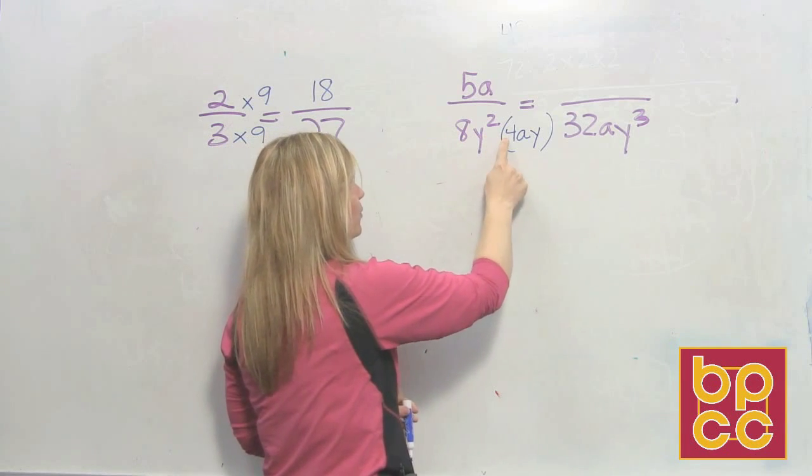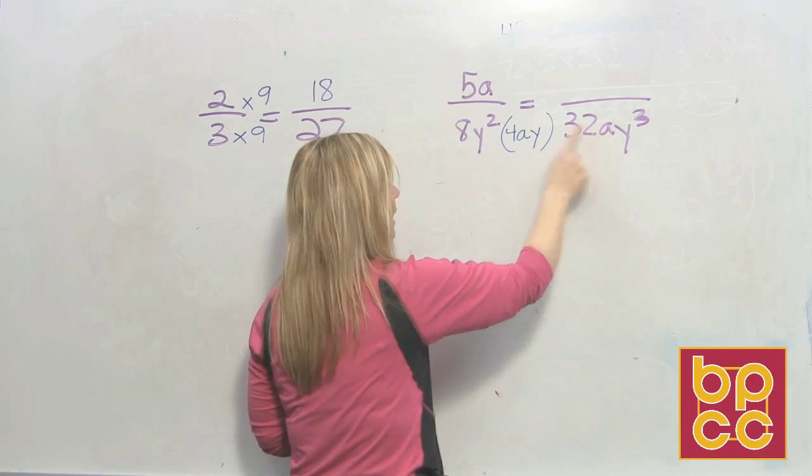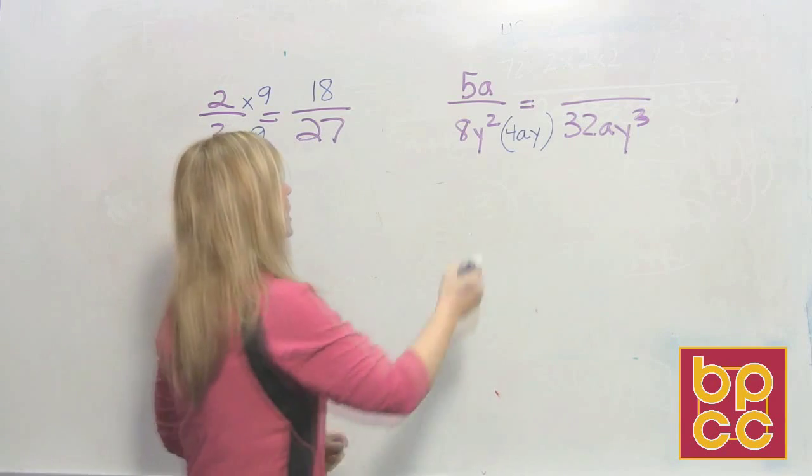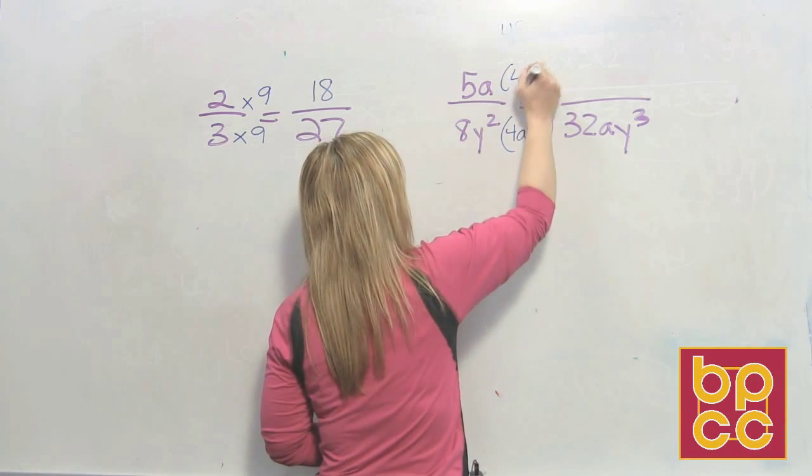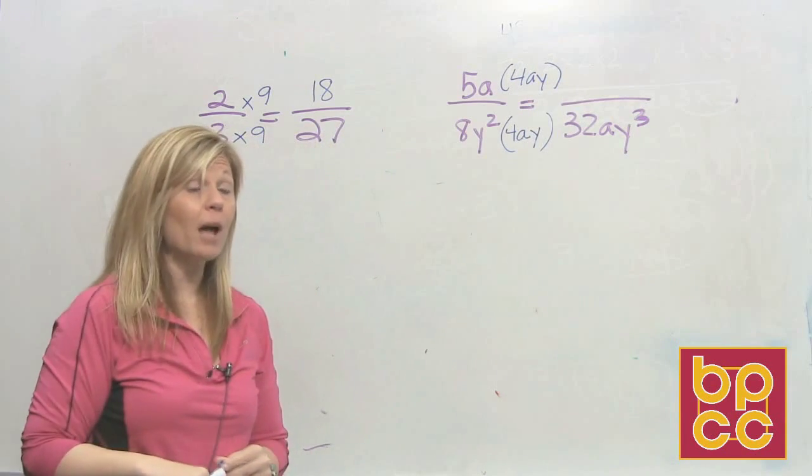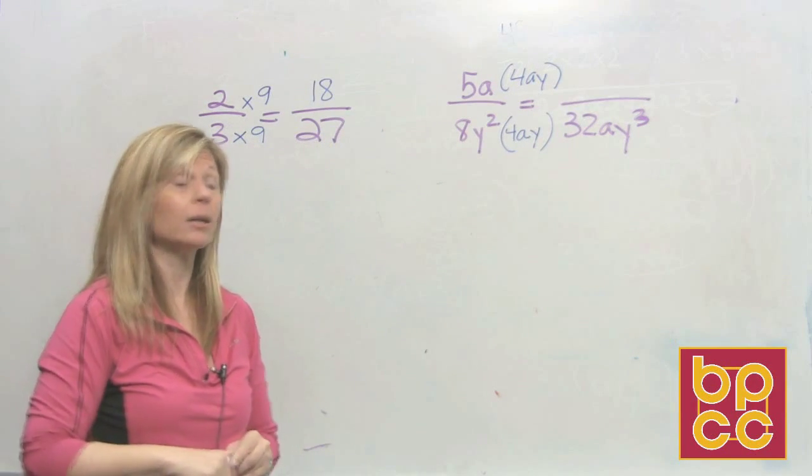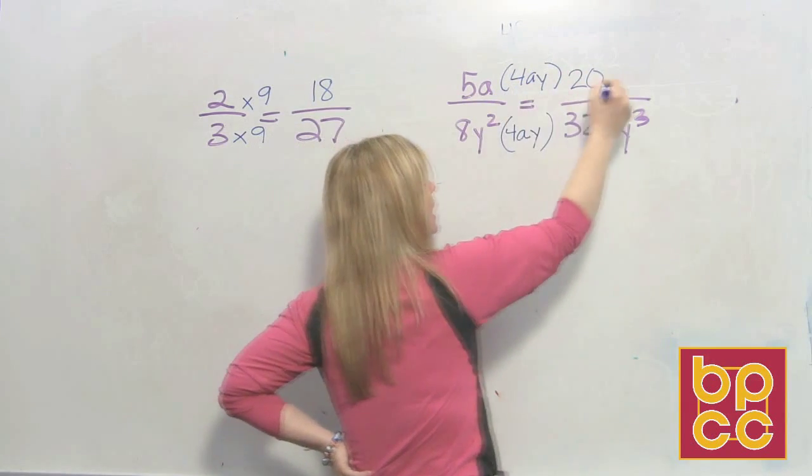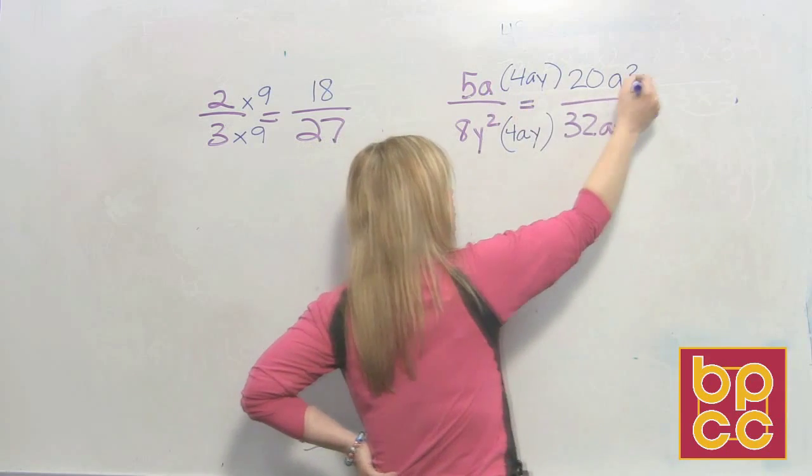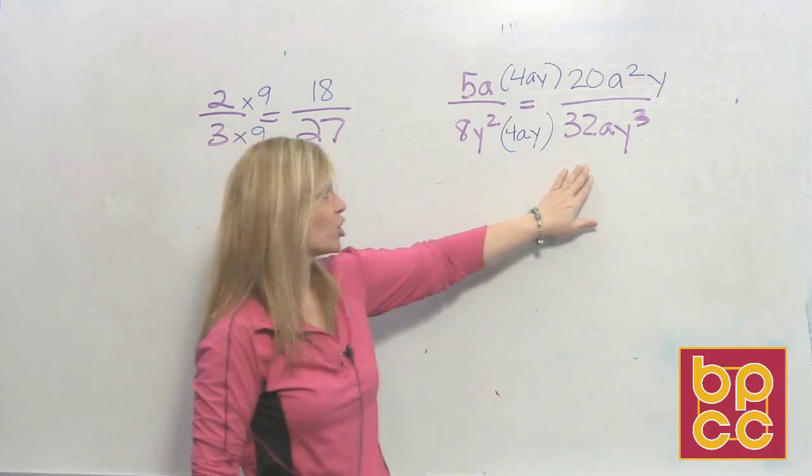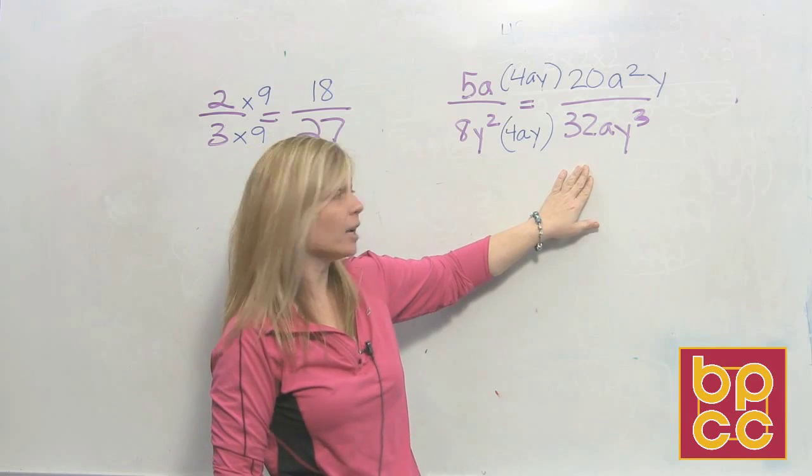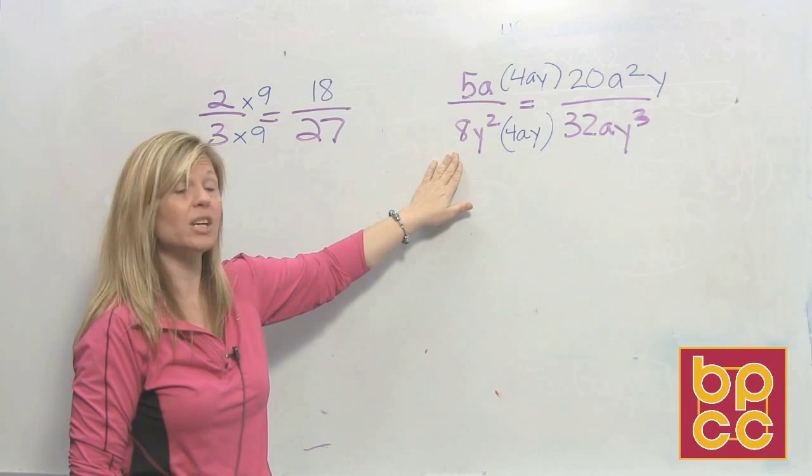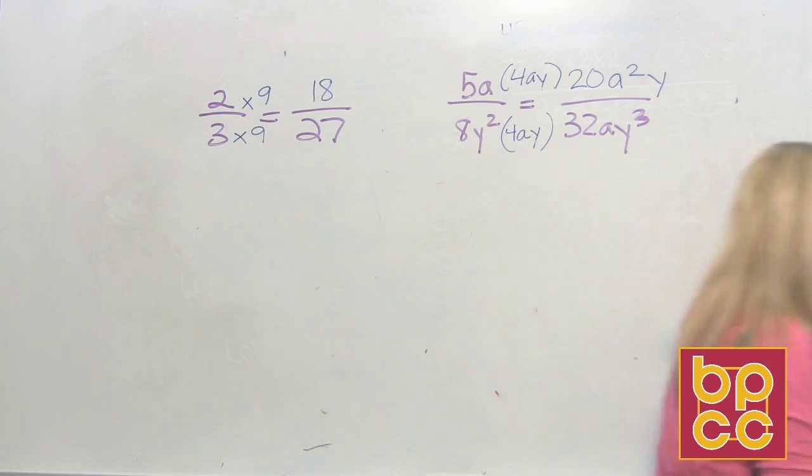Check it. Eight times four is thirty-two. That would be the a, and y-squared times y would be y-cubed. So to make the equivalent fraction now, we're going to multiply the same thing to the numerator. Remember, to multiply, terms do not have to be alike. Five times four is twenty, a times a is a-squared, and then there's also that y. And this fraction, twenty a-squared y over thirty-two a y-cubed, doesn't look like this one, but it's equivalent. Equivalent means it's equal.